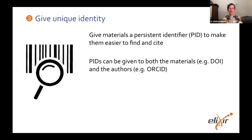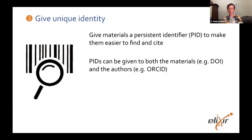Step three, which will sound quite familiar from what we've just heard, is to give your training materials a unique identity. One of the persistent identifiers you can use here is a DOI, and often if you're sharing through things like Zenodo, it will automatically be given a DOI. You can also encourage the use of PIDs for authors by using ORCIDs — by doing this you're making sure that you get credit for the work you've done, and any contributors are also getting credit, which helps build your reputation as a trainer.